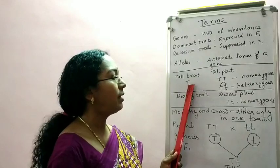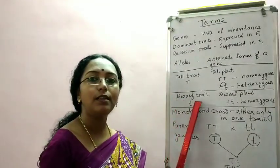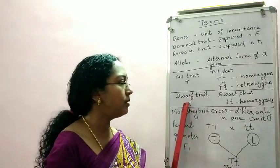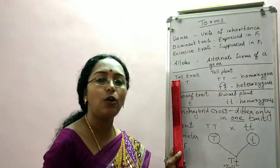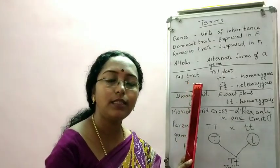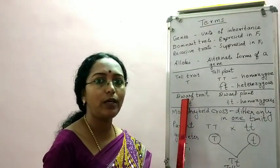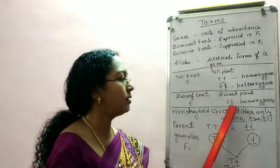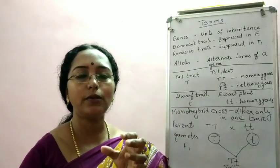If I write small letter t, I am representing the recessive form of it. The recessive form of tall is dwarf. We should not represent it as capital D or small d — always the dominant character is taken into account. Here the dominant character is tall, so I have taken the letter T. Capital T represents the dominant trait; small t represents the recessive trait, which is dwarf. If I write small t and small t together, that is a dwarf plant.